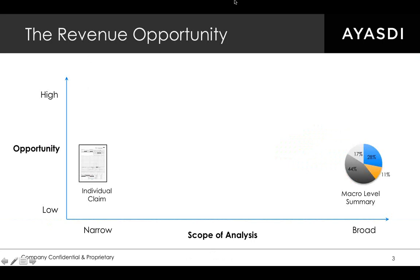Traditionally, you have two options for approaching this problem. You have macro kinds of analyses — like looking at an Excel pivot table and breaking down your denials by payer, facility, or denial type. This has its place, but it doesn't get you specific enough answers to be actionable. It tells you here are the top five facilities in my network that have a denials problem. Well, what problem do they have? How do you fix it? It tells you pre-cert imaging denials are a major problem in my network. But again, why, and how do I fix that? It gets you the basic information you need about denials, but it doesn't get you down to specific enough descriptions to be actionable.